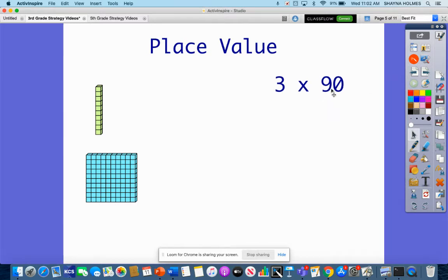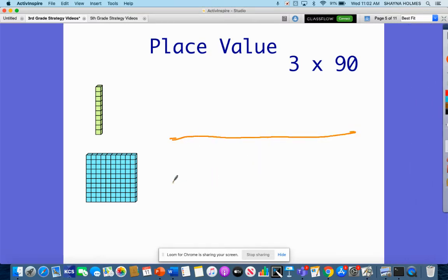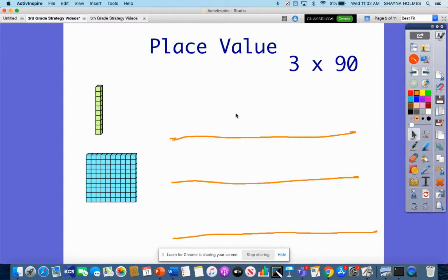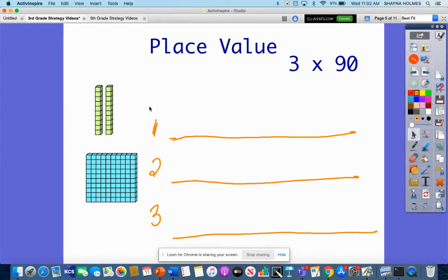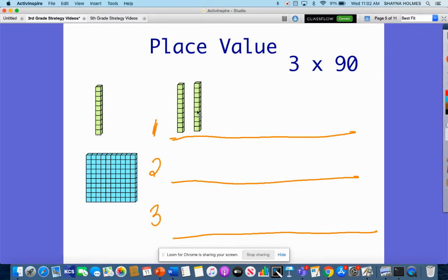Our example problem here is 3 times 90. What I'm going to do is I am going to make 3 rows. I'm going to make 3 different rows and what I'm going to do is I'm going to pull these place value blocks over here and then I'm going to put 90, or 9 tens in each group.